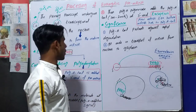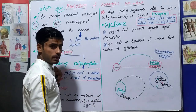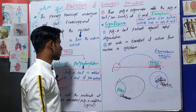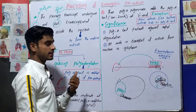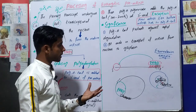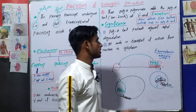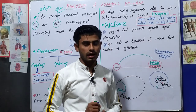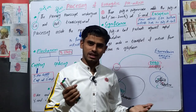In the first lecture we discussed capping, in this lecture we discussed polyadenylation, and in the third lecture we will discuss splicing — how the pre-messenger RNA becomes the complete mature messenger RNA. Thank you so much, see you in the next lecture.